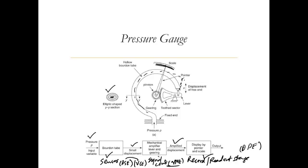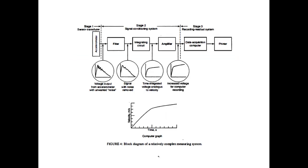In more detail, consider an accelerometer. At the sensor/transducer stage, the signal conditioning system includes filtering, integrating circuits, and amplifiers. The signal with noise is first filtered to remove noise, then amplified because the signal alone may not be sufficient for recording devices. The amplified signal is then transferred to data acquisition on a computer and then to a printer or controller.